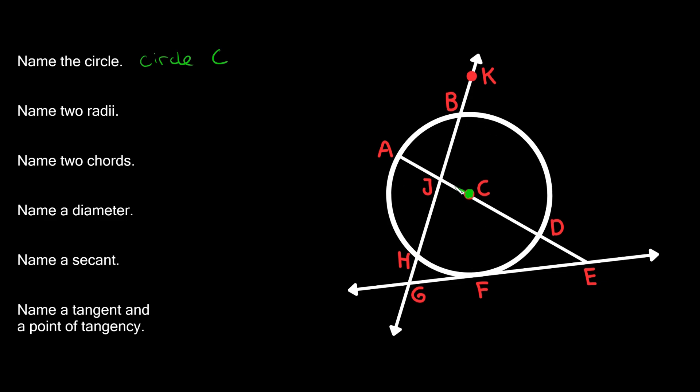So for instance, this line or segment right here from C to A, that would be a radius, and also on the other side from C to D, that would also be a radius.